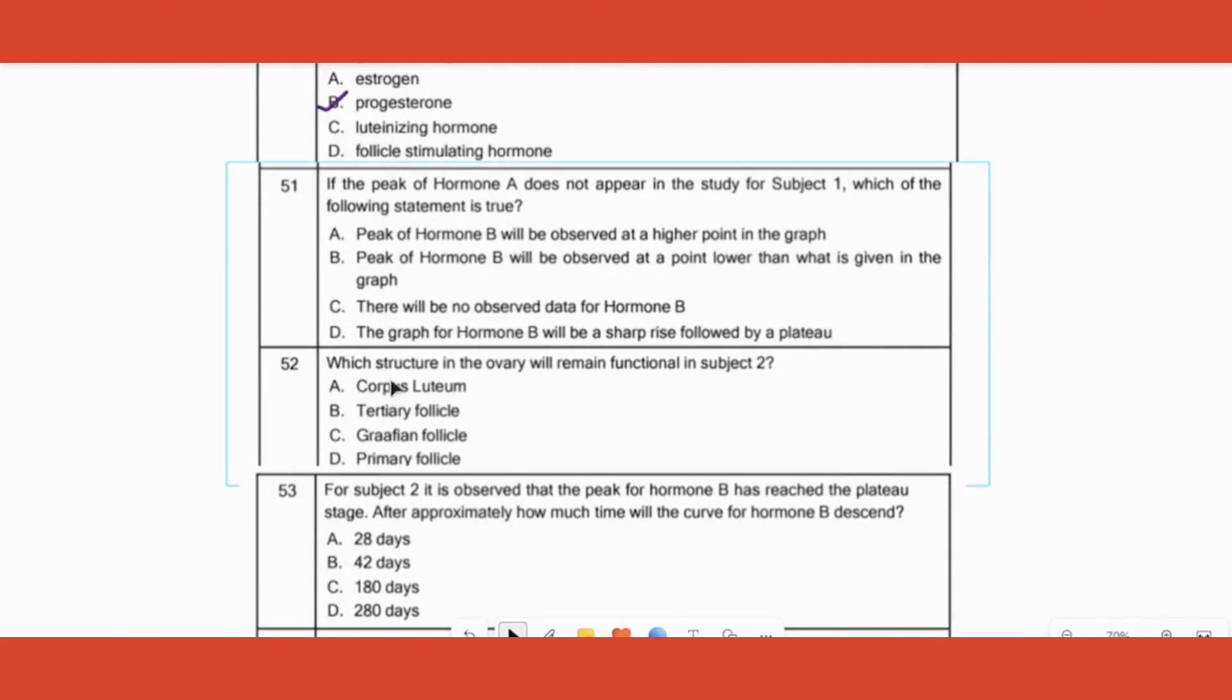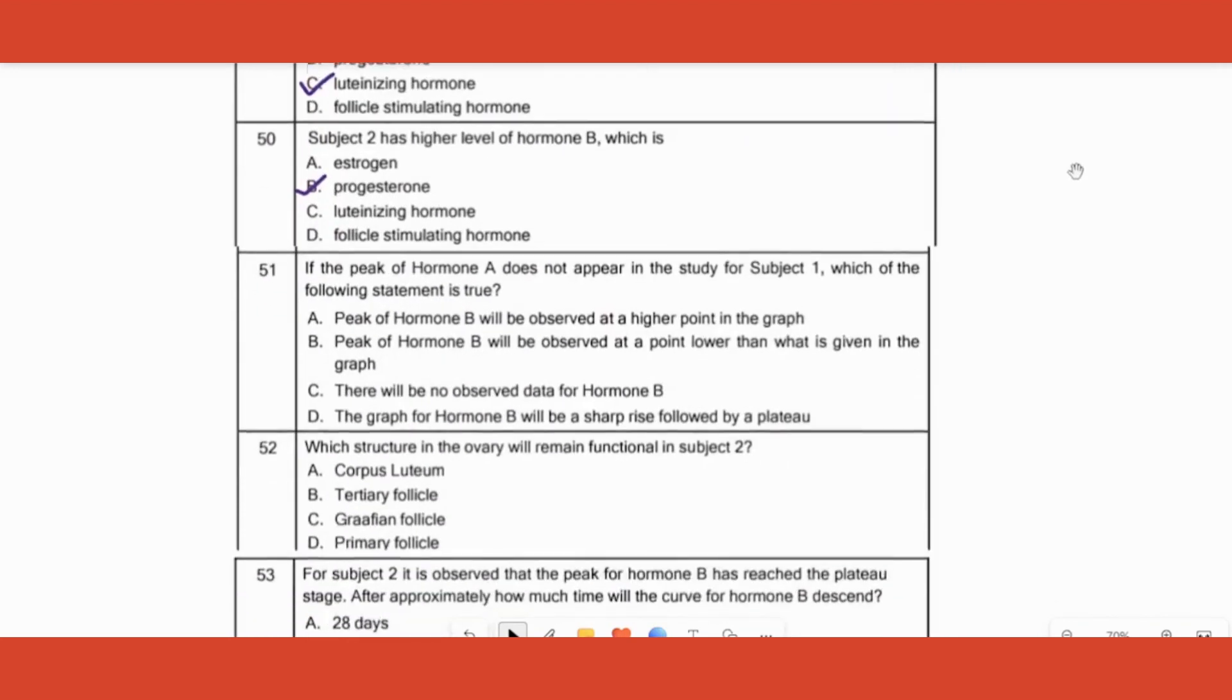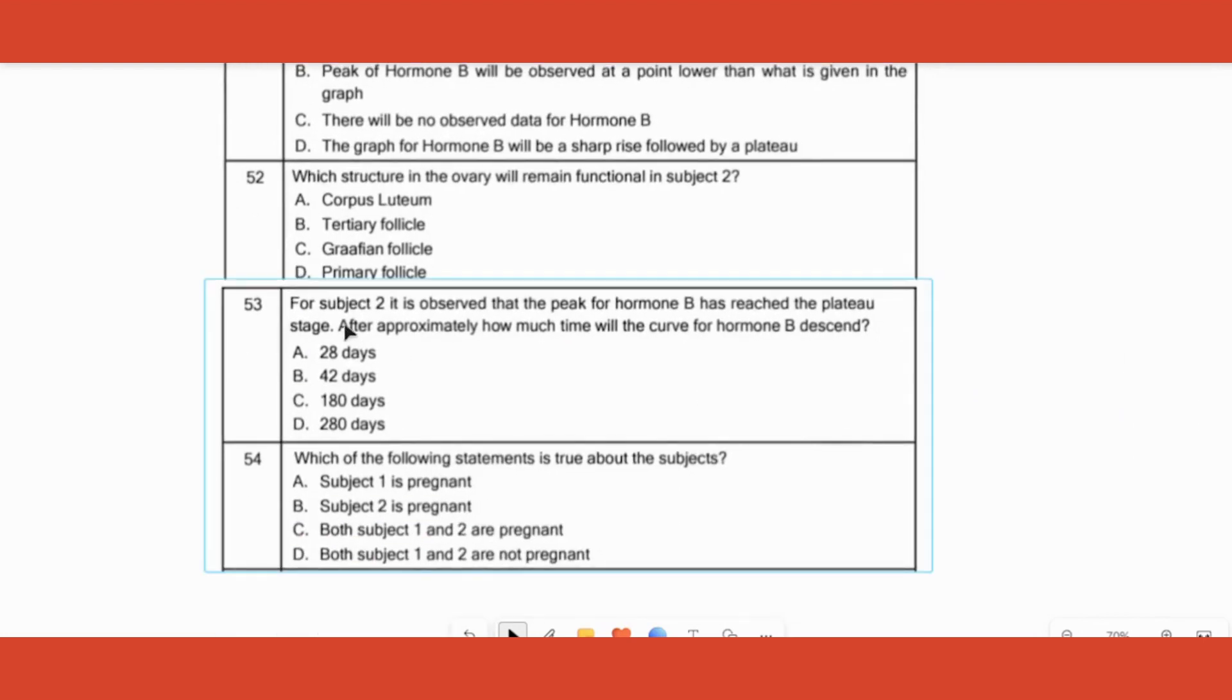There is another clue given here. There is another hormone shown here called as HCG. What is this HCG? It is a specific hormone which is seen only during pregnancy, and that is human chorionic gonadotropin.